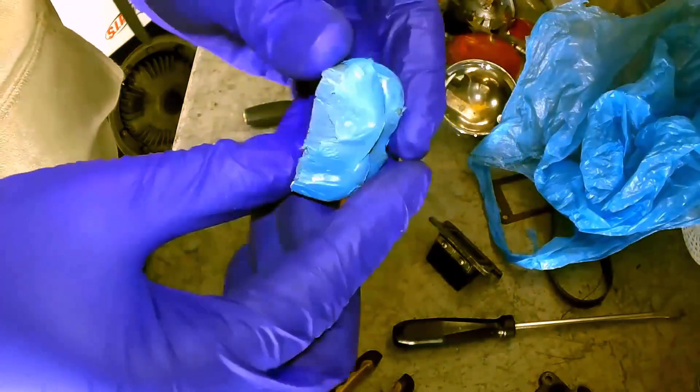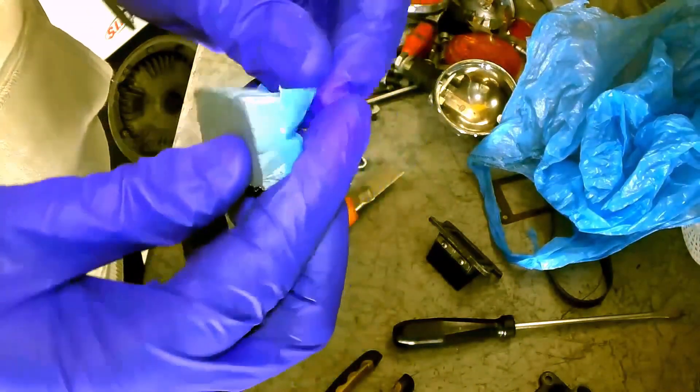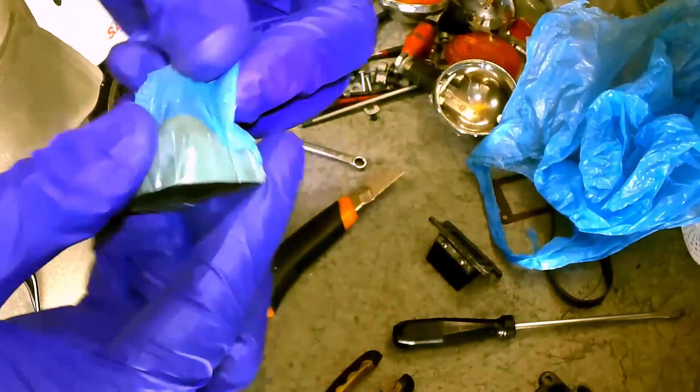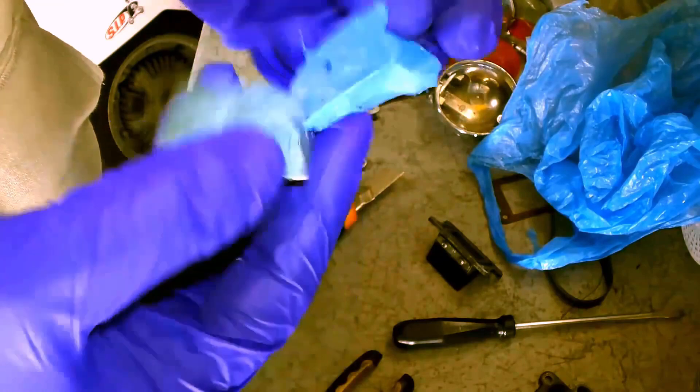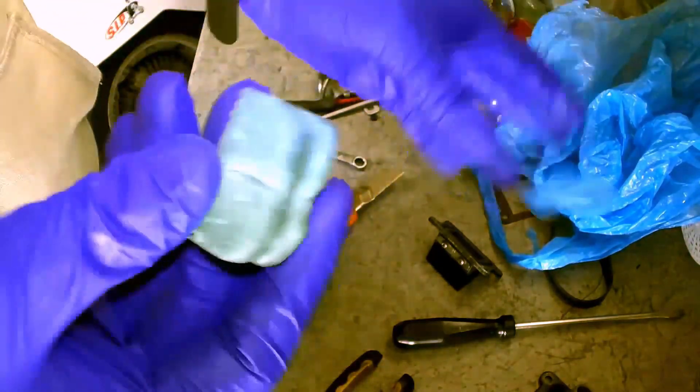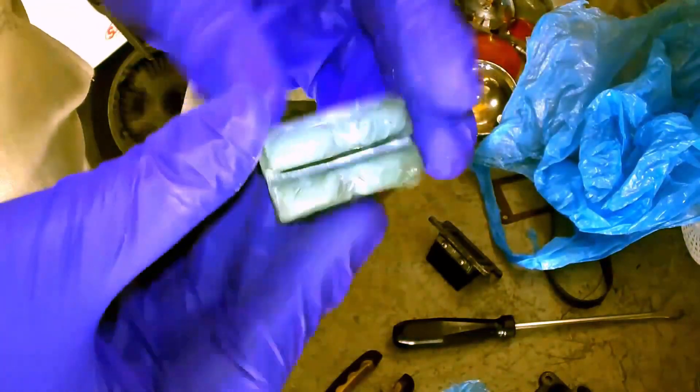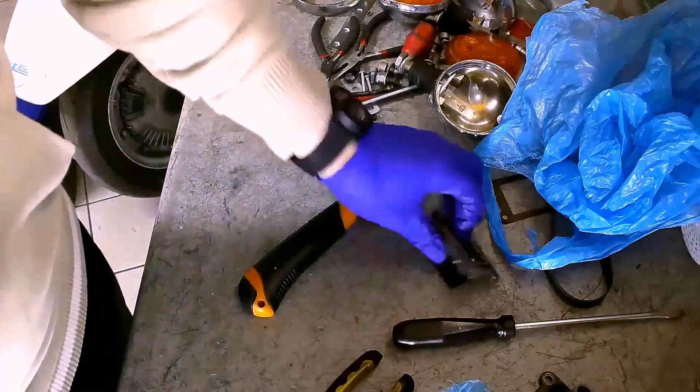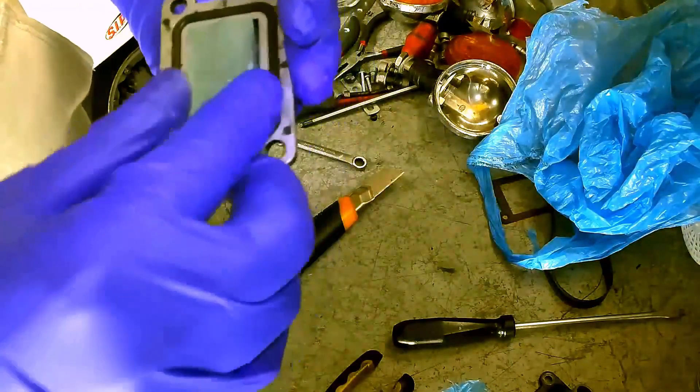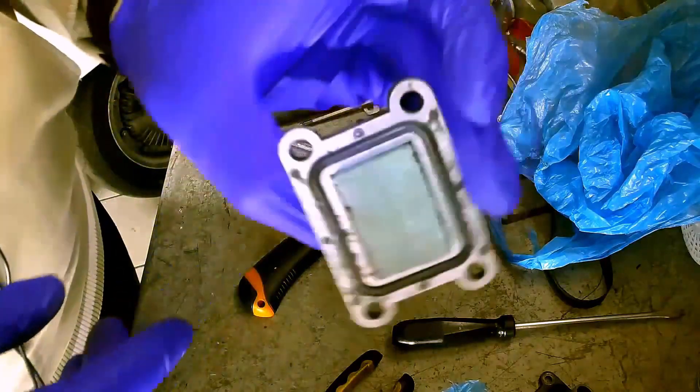Here we are. We've extracted the flow guide from the reed valve pack. Thanks to the oil, as you can see, the envelope we used comes off very easily. Here it is. Clean and ready to be worked on. It's a little rough, but still performs its function very well.